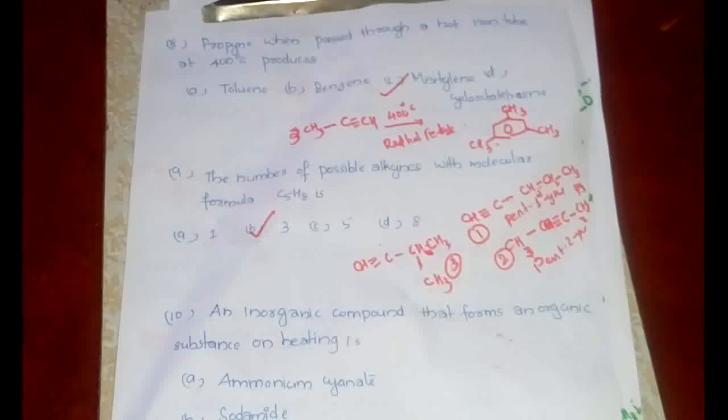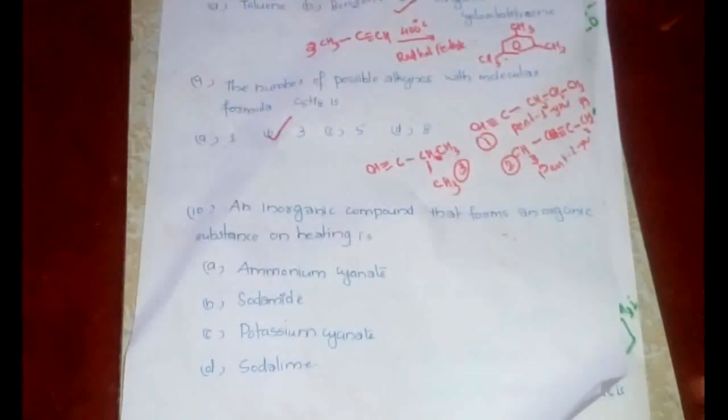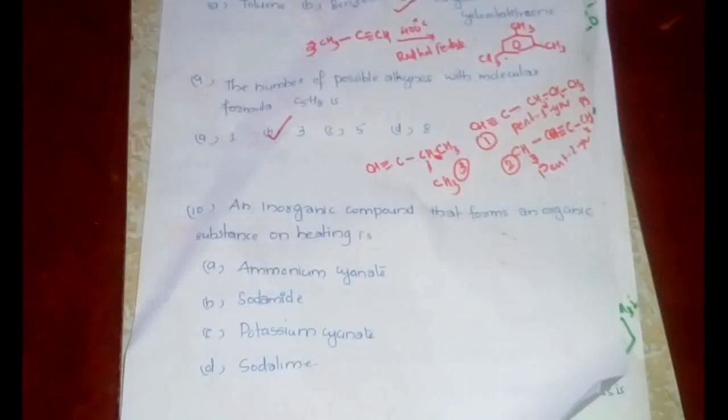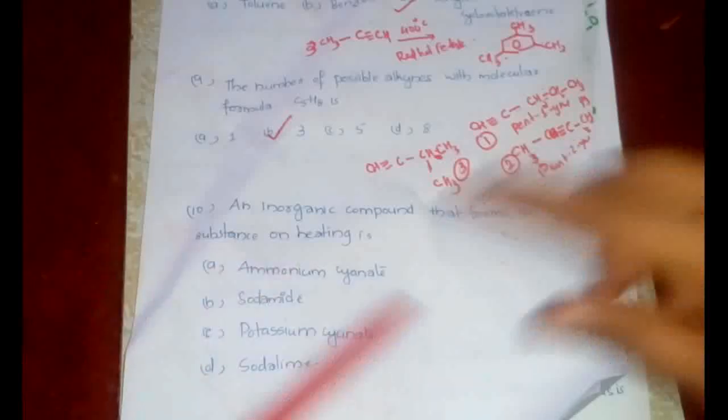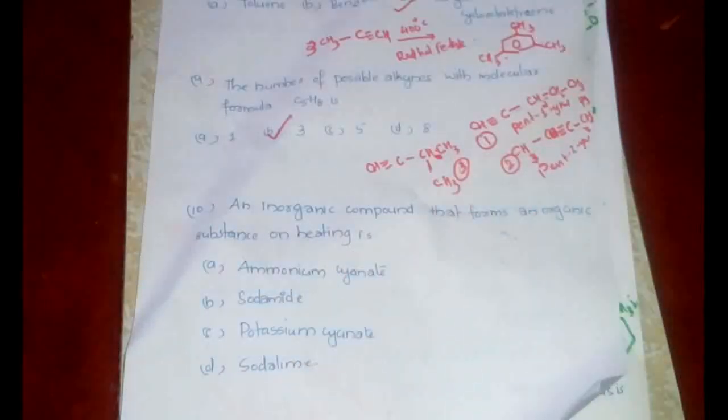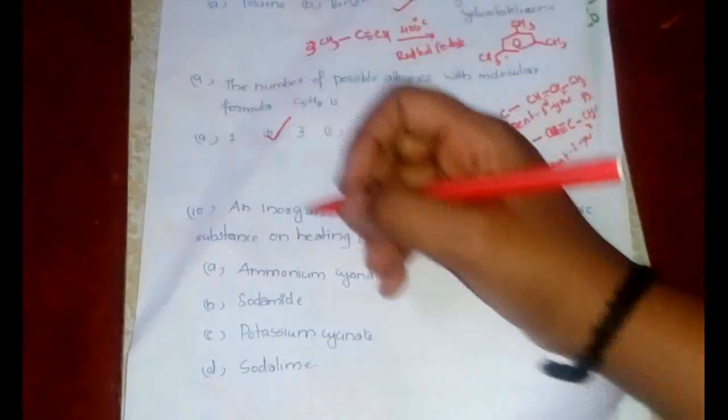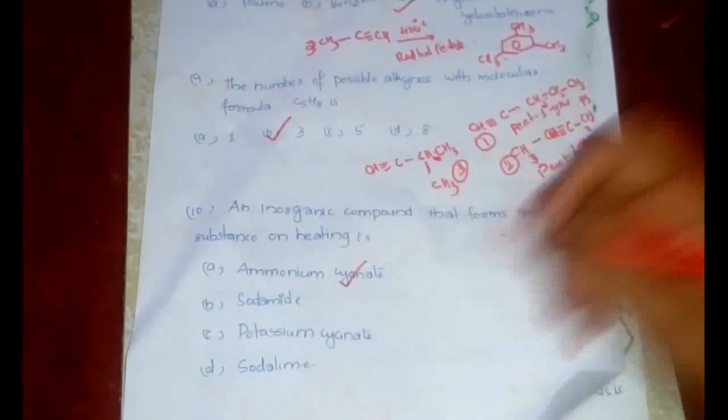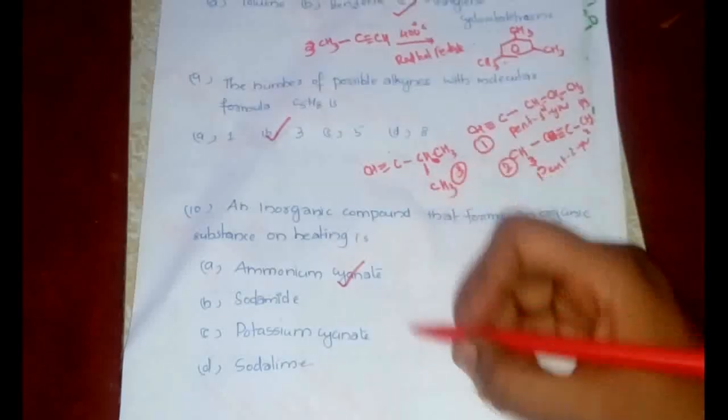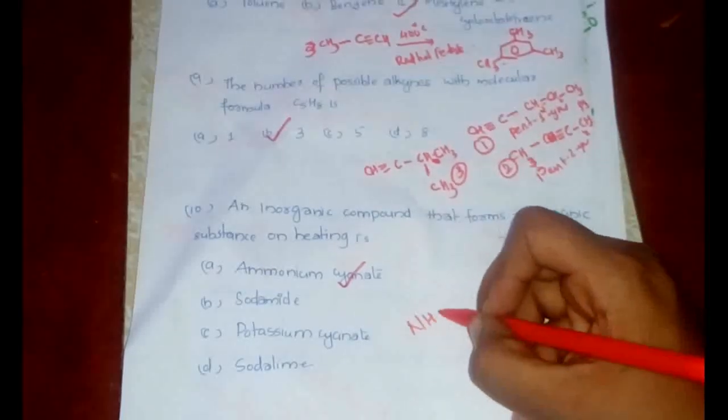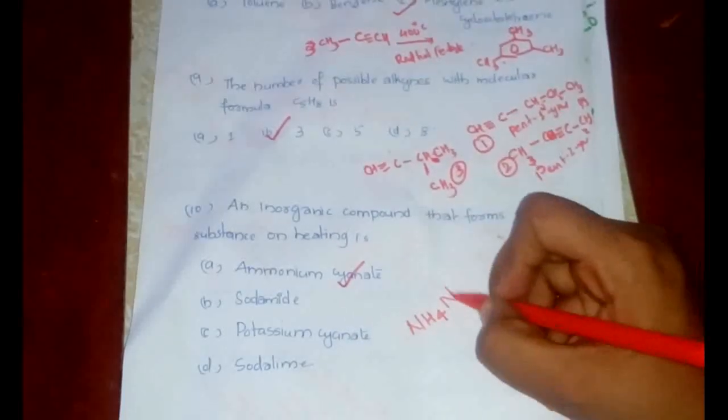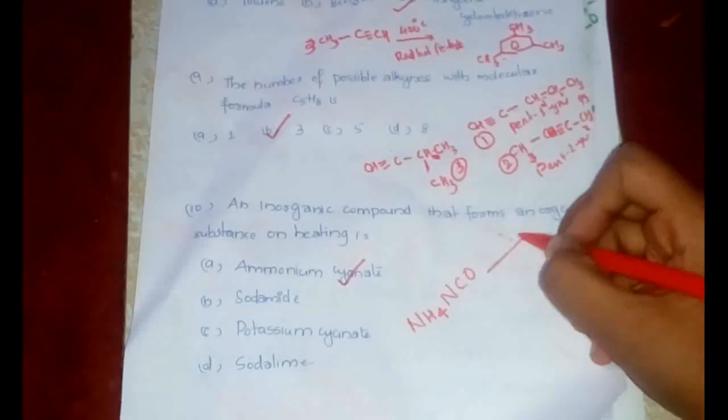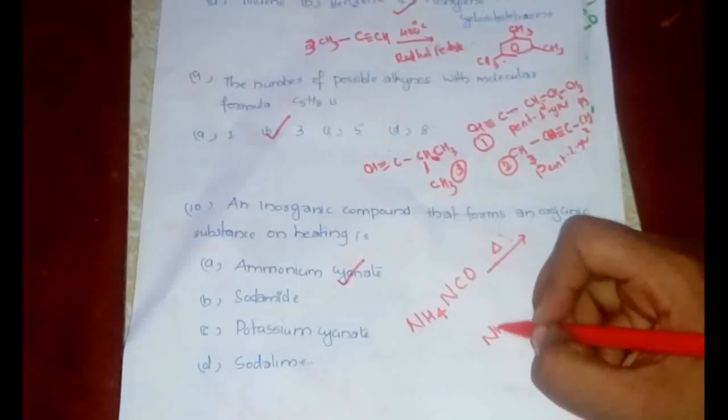Now the tenth question is the most important. It is one of the most important reactions for the preparation of an important organic substance. The answer here, we are asking for an inorganic compound that forms an organic substance on heating. The answer is ammonium cyanide.